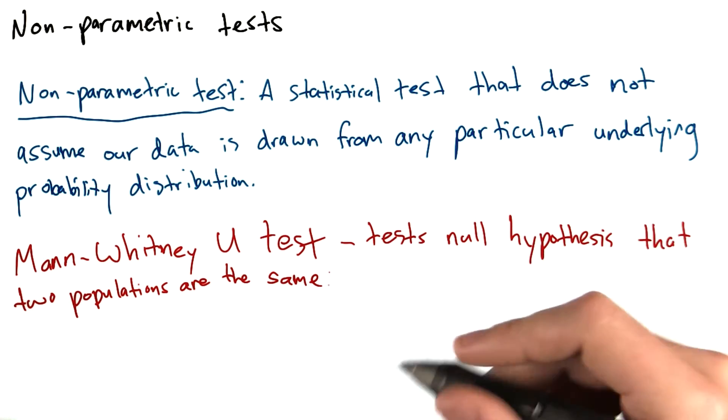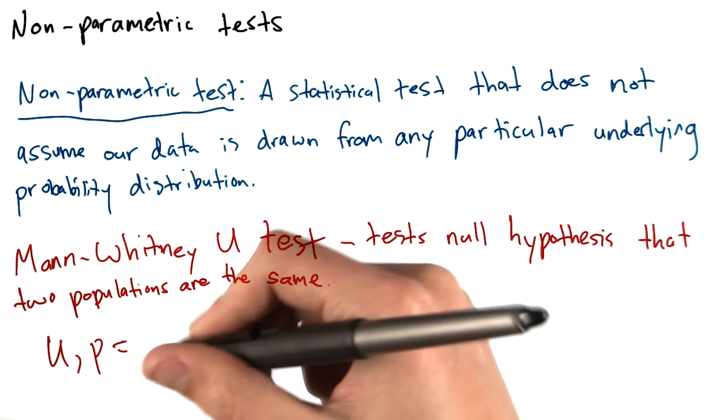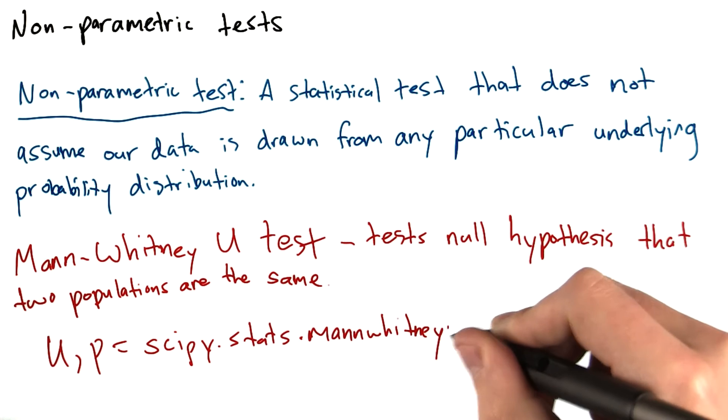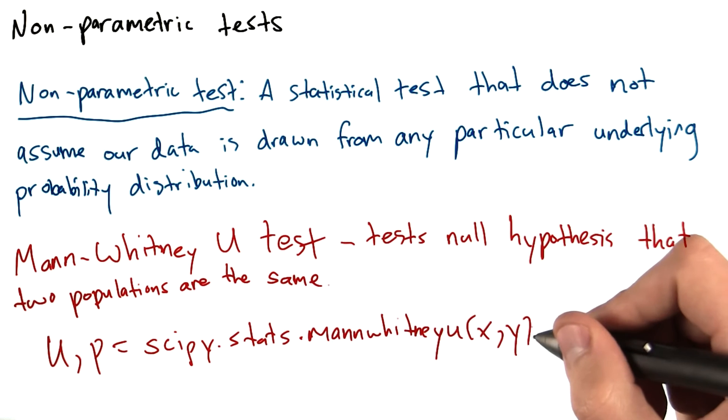We'd simply say U and P are equal to SciPy.Stats.MannWhitneyU and provide as arguments our two samples, which we'll call here x and y.